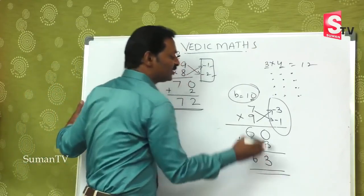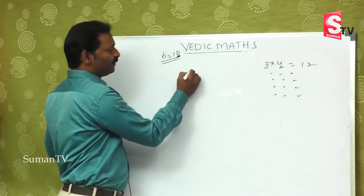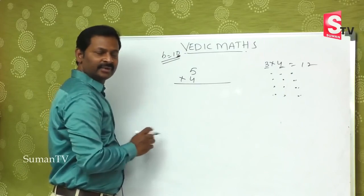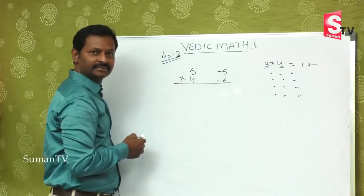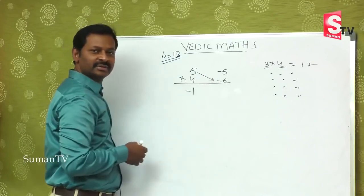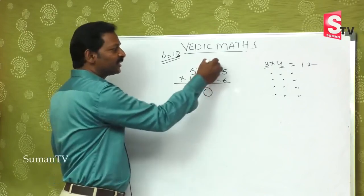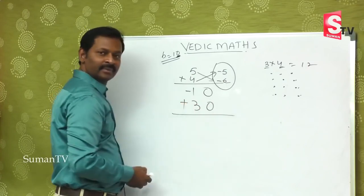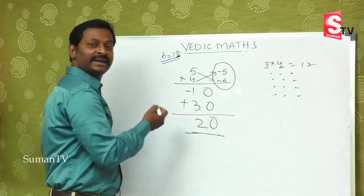Suppose you say: Sir, what if we have a smaller number? Like 5 multiplied by 4. We take base as 10. So 5 is less than 10 by 5 — minus 5. And 4 is less than 10 by 6 — minus 6. Now 5 minus 6 would be minus 1 — not possible directly. So 4 minus 5 is also minus 1. We put 0 in the second place. Minus into minus is plus, so 5 times 6 is 30. The logic: 30 with base 10 gives 20 carry and 0. So the answer is 20. This is the methodology — it works for small or big numbers.